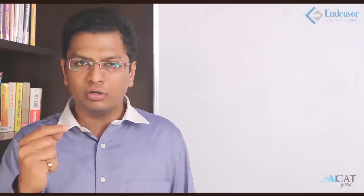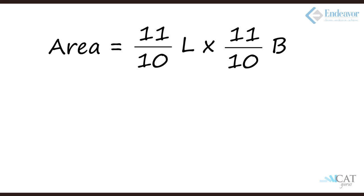So length into breadth. Length becomes 10% more, so it becomes 1 by 10, 11 by 10, and same happens with the breadth. So 11 by 10 L into 11 by 10 B will be the new area. That will be nothing but 121 upon 100, which is 21% increase.